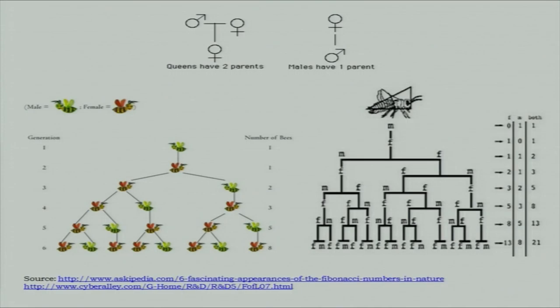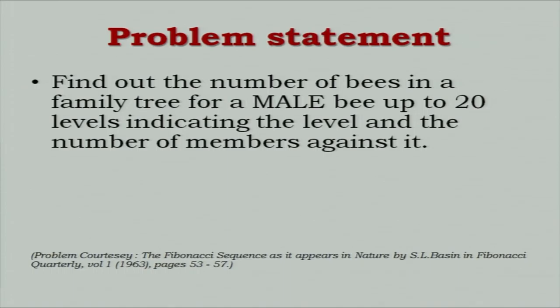Instead of simply asking for the 20th Fibonacci number, we pose the problem as: find the number of bees in a family tree for a male bee up to 20 levels — the 20th generation or 20th number in the series. The concept being taught is recursion — a function calling itself. The nth Fibonacci number equals the sum of the previous two numbers. There are two approaches: recursive and non-recursive.